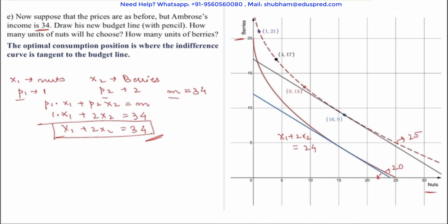Here we can see that your indifference curve is tangent to the budget line at the consumption bundle 16,9. So your optimal consumption bundle is 16,9. Also your consumption bundle takes the form of x1, x2. Since your x1 is on the x-axis which is nuts and x2 is on the y-axis which is berries. Now mapping this your x1 becomes 16 and x2 is equal to 9. Thus Ambrose would be consuming 16 nuts and 9 berries.